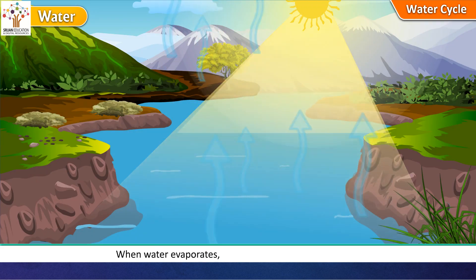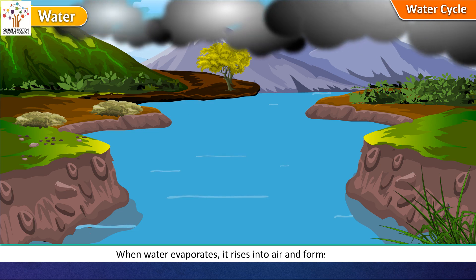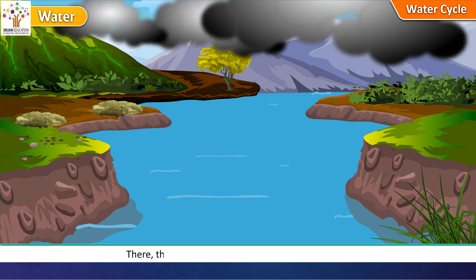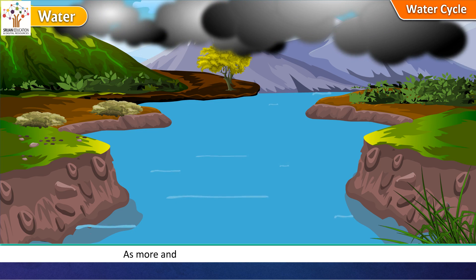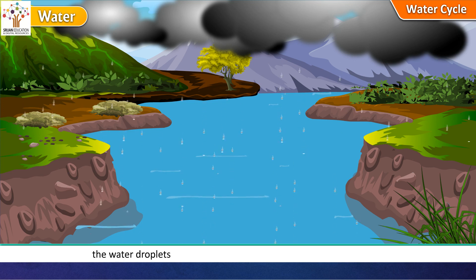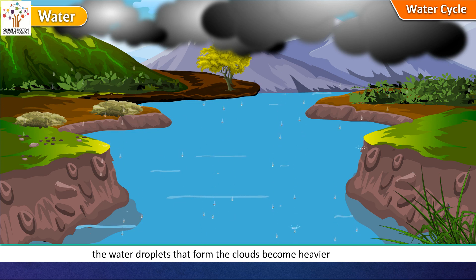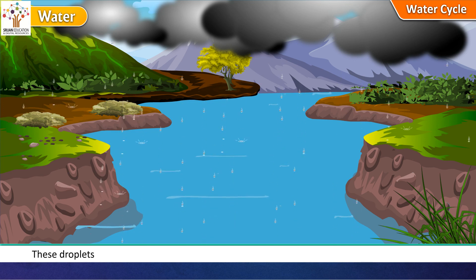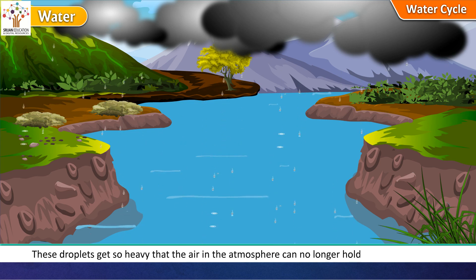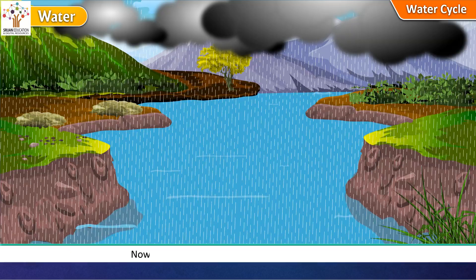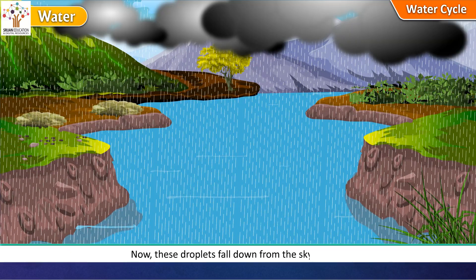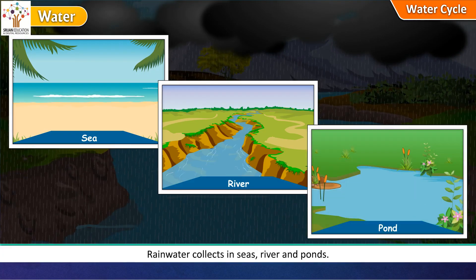When water evaporates, it rises into the air and forms clouds. There the water vapor condenses into liquid water. As more and more water vapor cools into the clouds, the water droplets that form the clouds become heavier and heavier. These droplets get so heavy that the air in the atmosphere can no longer hold them up in the sky. Now these droplets fall down from the sky as rain. Rainwater collects in seas, rivers and ponds.